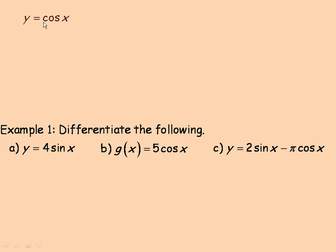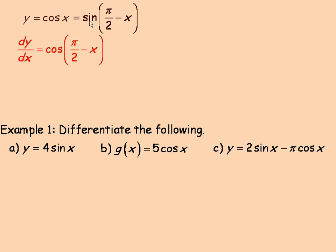Now we're going to show what the derivative of cos x is. Remember that cos x equals sine of (π over 2 minus x) — a trigonometric identity that relates cosine with sine, because they are phase shifts of one another. So we write cos x as sine(π/2 minus x) and differentiate. The derivative of sine(π/2 minus x) is cos(π/2 minus x), multiplied by the derivative of what's inside — this is the chain rule. The derivative of (π/2 minus x) is negative 1, since π/2 is a constant.